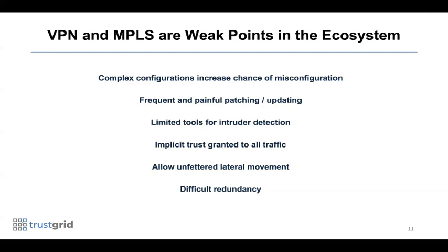Weighing in just behind human elements, VPN and MPLS networks are also one of the biggest weak points in a fintech ecosystem. Complex configurations don't necessarily mean misconfiguration, but every added complexity raises those chances — simplicity is always better. Patches requiring frequent manual intervention introduce chances for delays or no action at all, putting the network at risk of both breach and regulatory non-compliance. VPN and MPLS connections also have very limited visibility into what's actually happening, as all traffic is assumed to be good even when it isn't.